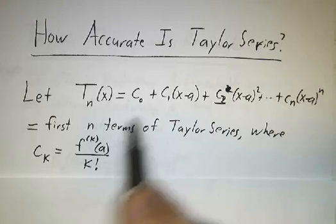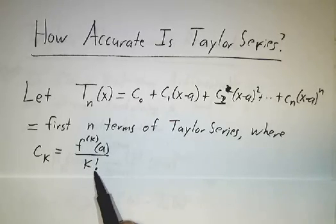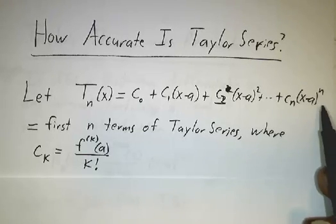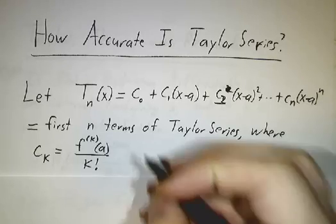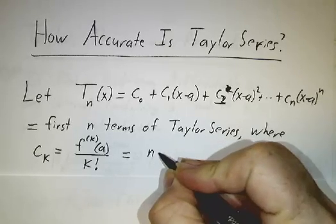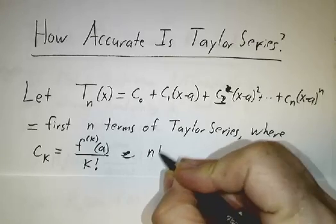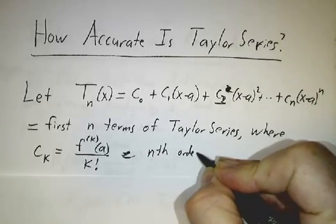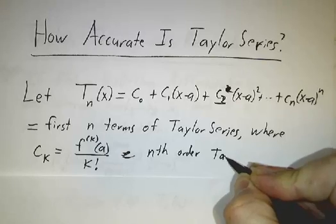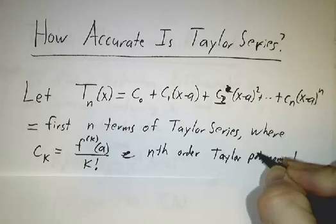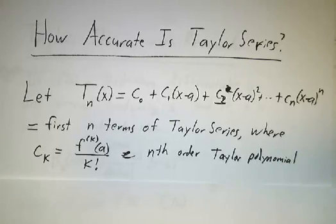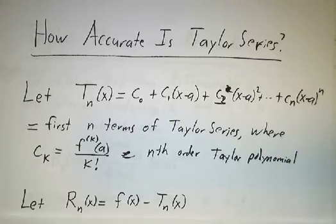And of course, we want the coefficients to be the kth derivative divided by k factorial. It's just the usual Taylor series except we're only cutting it off after n terms. So this is sometimes called an nth order Taylor polynomial. A Taylor series is when you take an infinite sum. A Taylor polynomial is when you only take a finite number of terms.